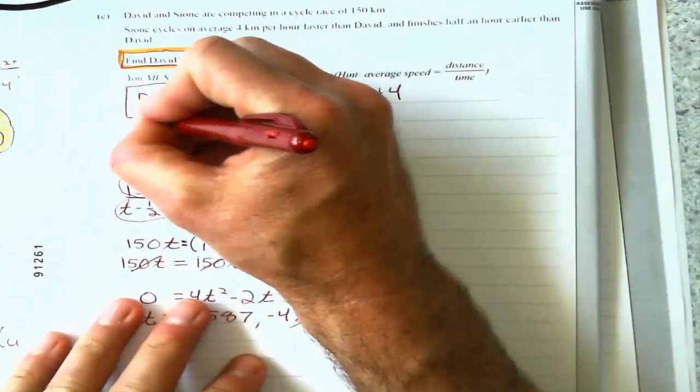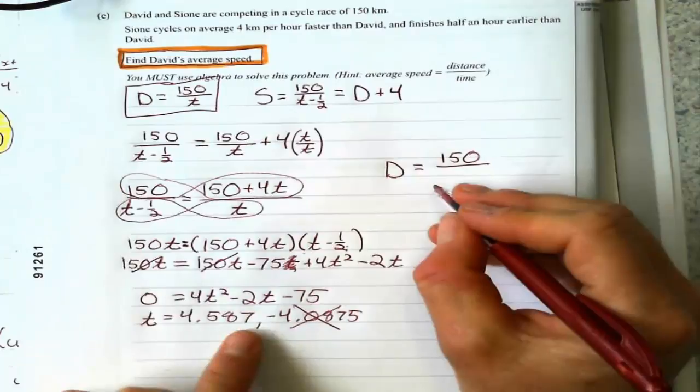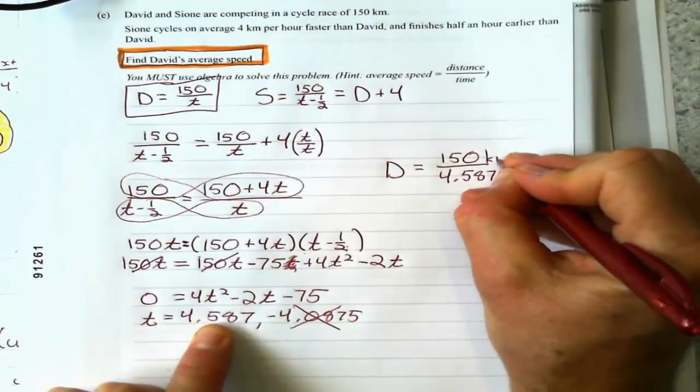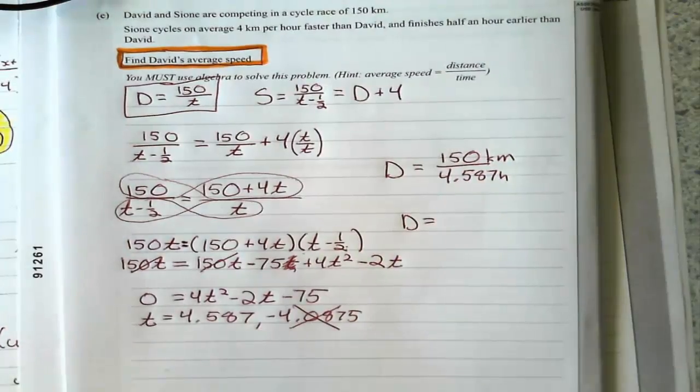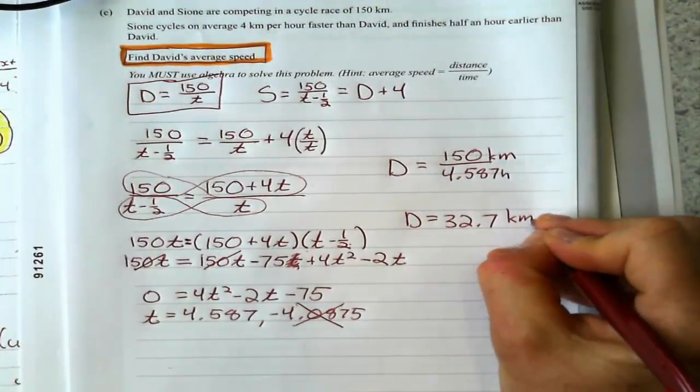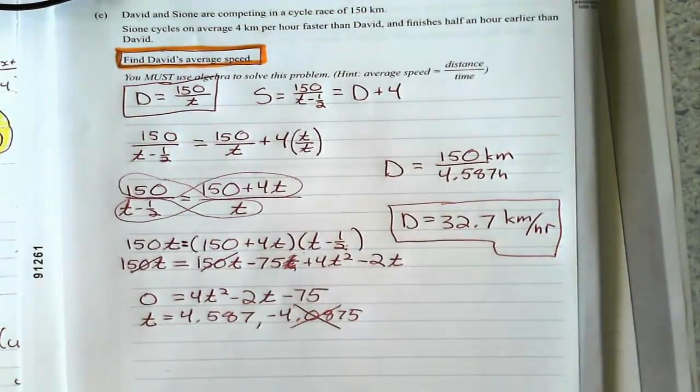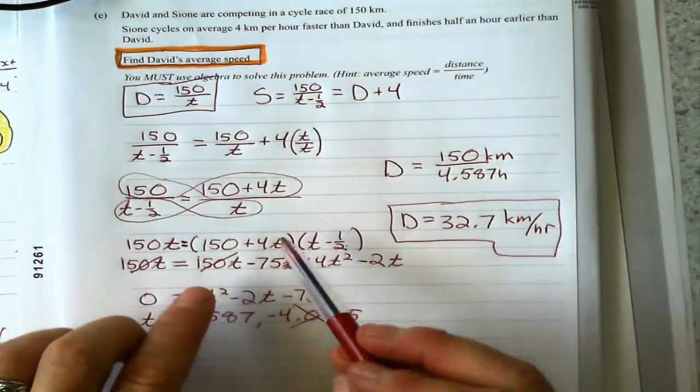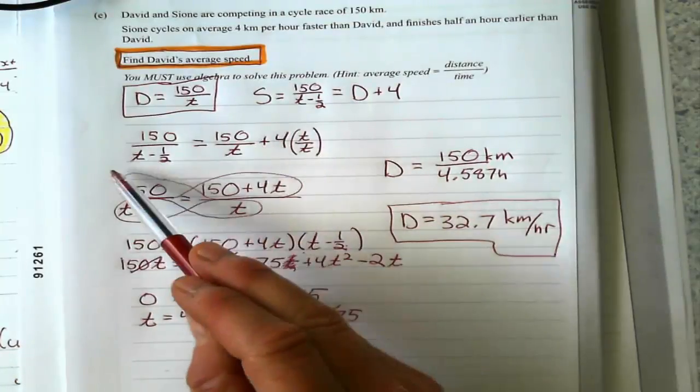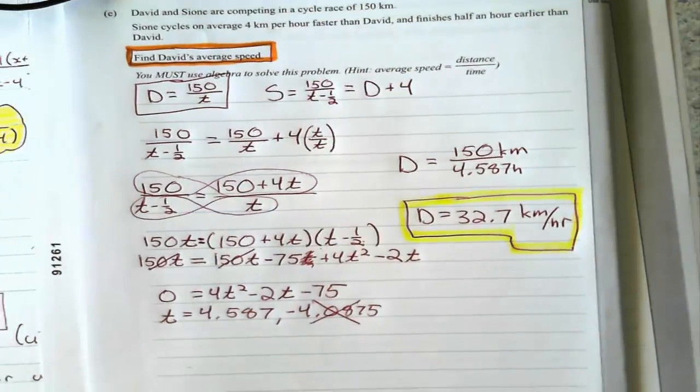And finally, to find David's average speed, I'm going to use this formula right here. David's average speed is 150 kilometers divided by 4.587 hours, and I get my answer of somewhere around 32.7 kilometers per hour. So pretty tough problem here. But once we get into this stage, it's not too difficult. But setting up that equation right there was the tricky part. Hope that helped. Thanks for watching.